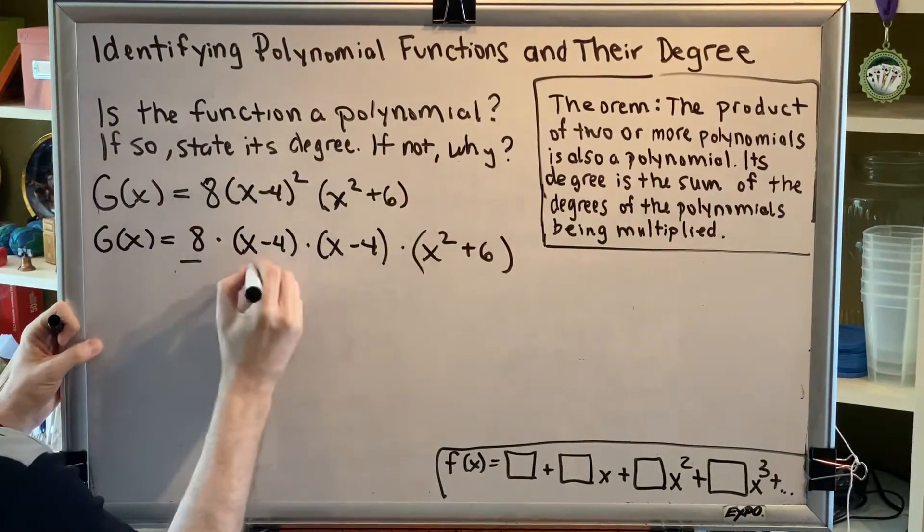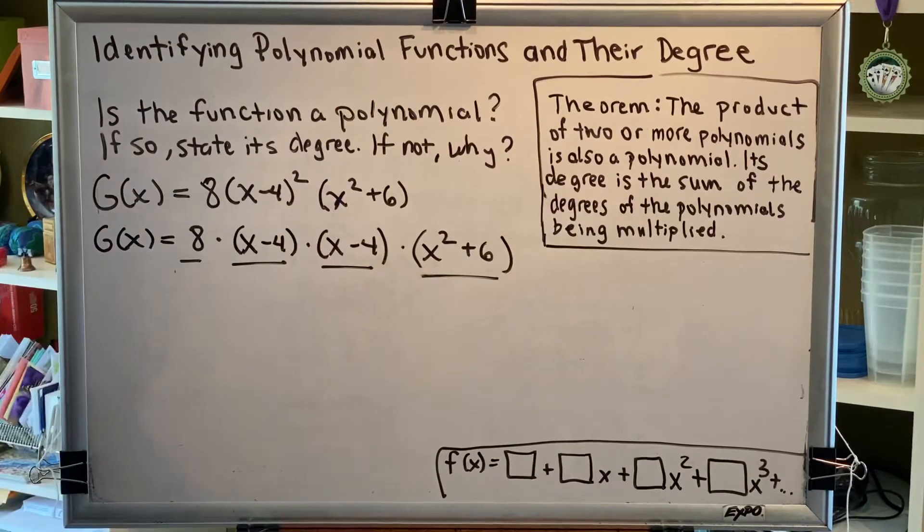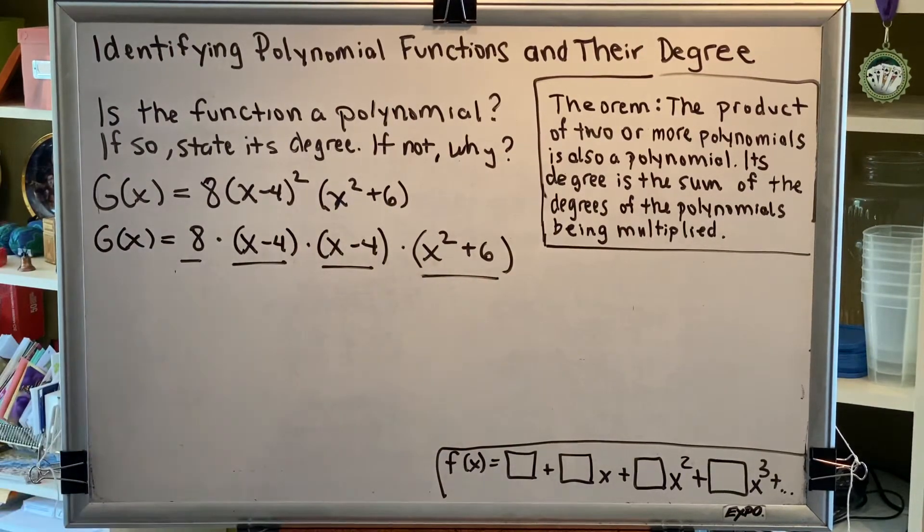If we can show that each of these four factors is a polynomial, then by this theorem, g of x is a polynomial.